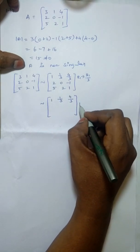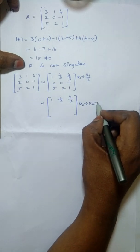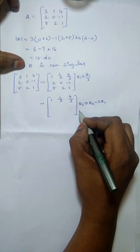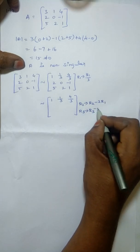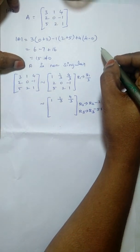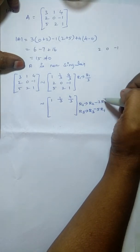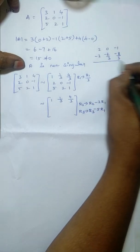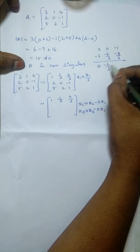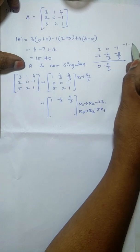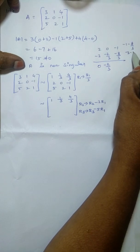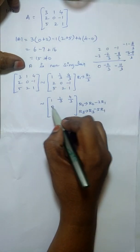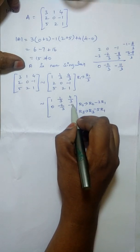R2 implies R2 minus 2R1. Computing: 2 minus 2 = 0, 0 minus 2/3 = minus 2/3, minus 1 minus 8/3 = minus 3/3 minus 8/3 = minus 11/3. So R2 becomes [0, minus 2/3, minus 11/3].